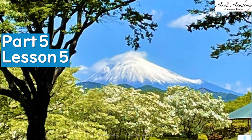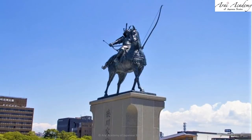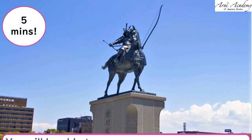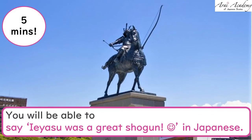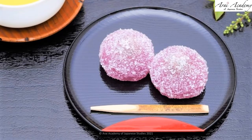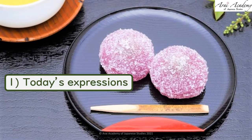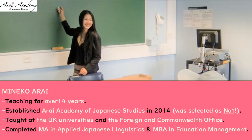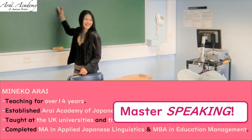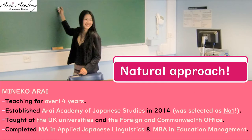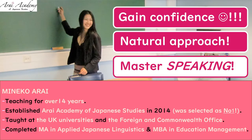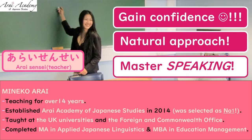Konnichiwa! Today, let's describe things in the past. In just about five minutes, you'll be able to say, 'Ieyasu was a great shogun,' for example. The structure is: new expressions, practice, and summary. Master speaking through my natural approach and gain confidence — please call me Arai-sensei.